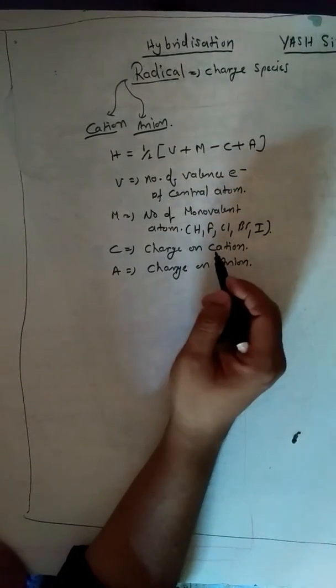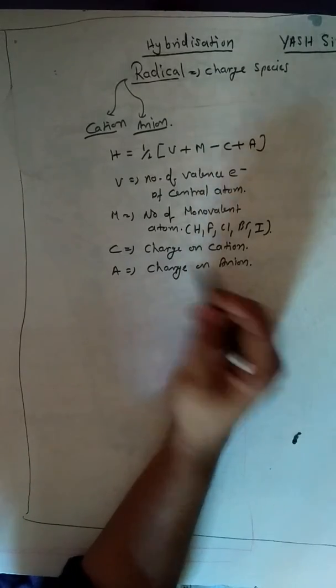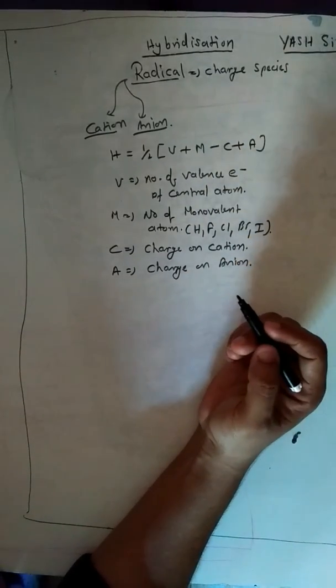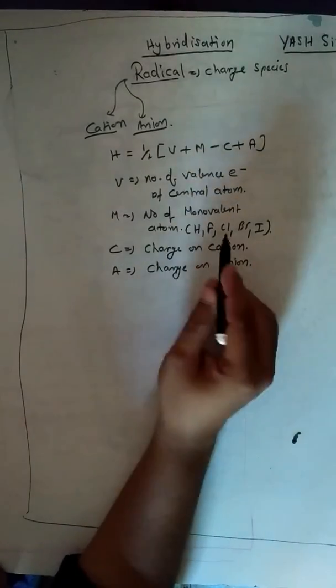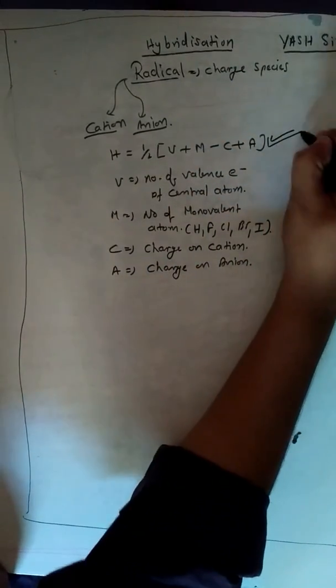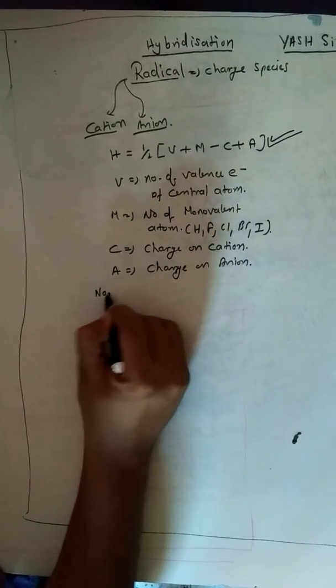So these are the basic terminologies which are being used in finding the hybridization. There are many other formulas of hybridization as well, but since we are talking about radicals, for radicals this is the best one. Now I will solve some of the examples like NO3 minus.